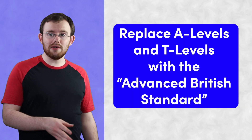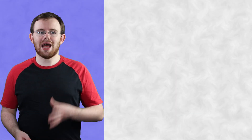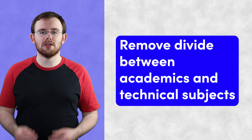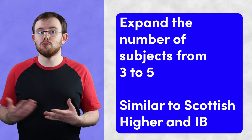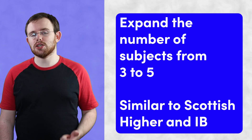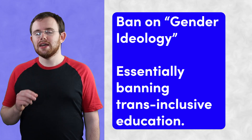Core to the Conservatives' plans in education is a reform to post-16 education. Under their plans, they would replace A-levels and T-levels with an Advanced British Standard that would only apply to England by default. The Conservatives say this would get rid of the artificial divide between academic subjects studied as A-levels and technical subjects studied as T-levels, and would expand the number of subjects taken by high school students to five — more similar to the Scottish Highers system or the International Baccalaureate. Beyond qualifications, they are also focusing on what they perceive as the culture in schools, with policies such as complete bans on mobile phones during the school day and a ban on the teaching of gender ideology in schools.